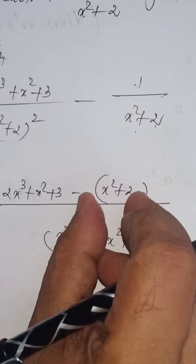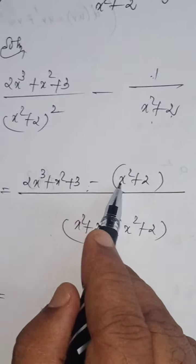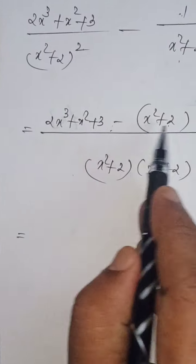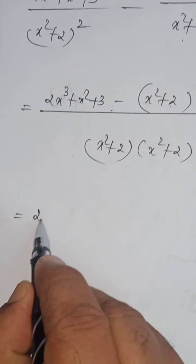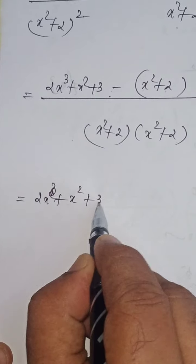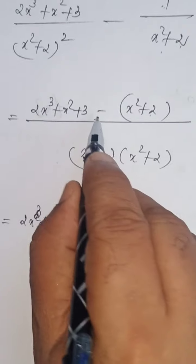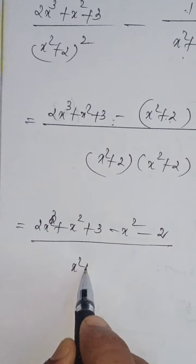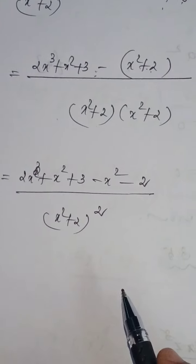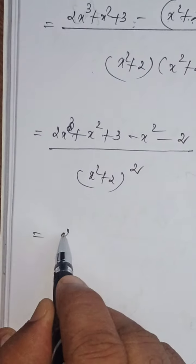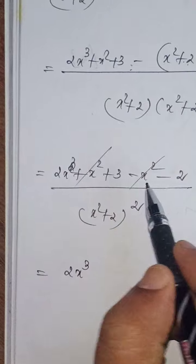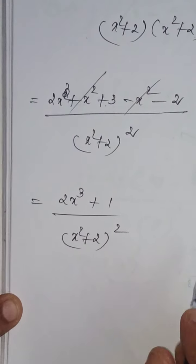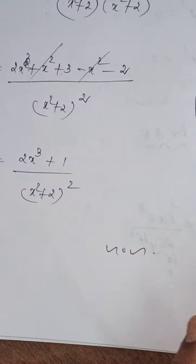Don't forget to write this expression inside brackets, because we have minus — minus is common for x squared as well as 2. Very important: write this expression inside the brackets; if we fail to put the brackets the answer will be wrong. Now eliminate the brackets: 2x cubed plus x squared plus 3 minus x squared minus 2 (brackets eliminated), divided by (x squared plus 2) whole squared. Equals 2x cubed — no other x cubed terms — then plus x squared minus x squared get cancelled, then 3 minus 2 equals 1, divided by (x squared plus 2) whole squared. So that is the answer for problem number 3.